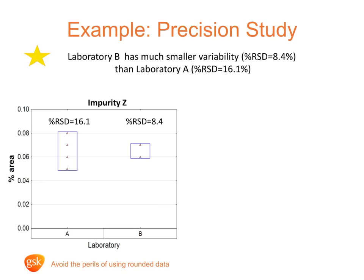Hang on, not sure this plot is correct — it only shows two points, but we did do six. Looking at the evenly spaced points, it appears the reported data to two decimal places has been plotted, and that's why not all the points can be seen.